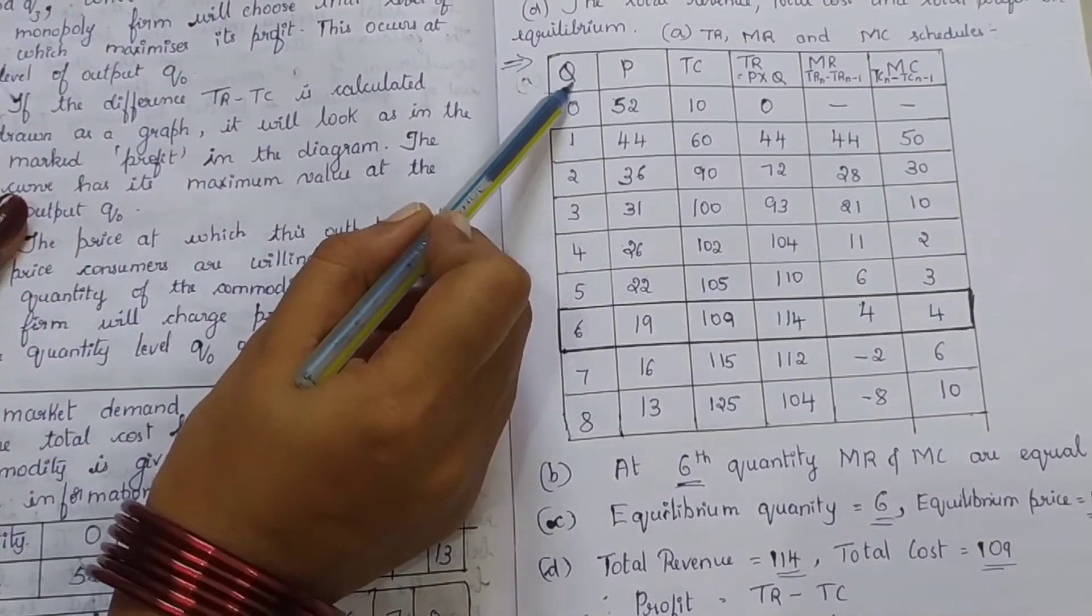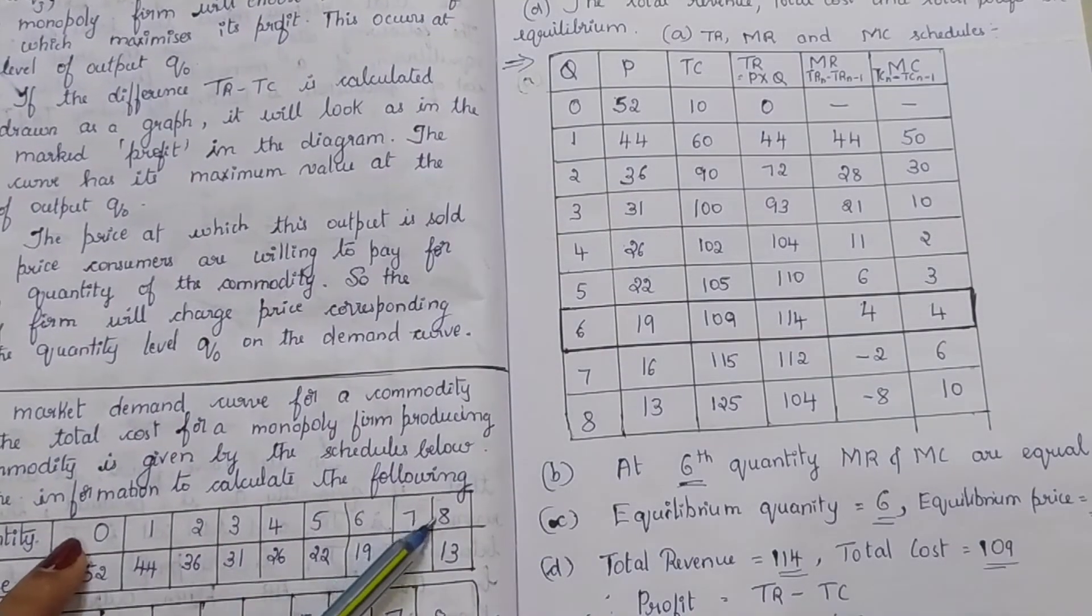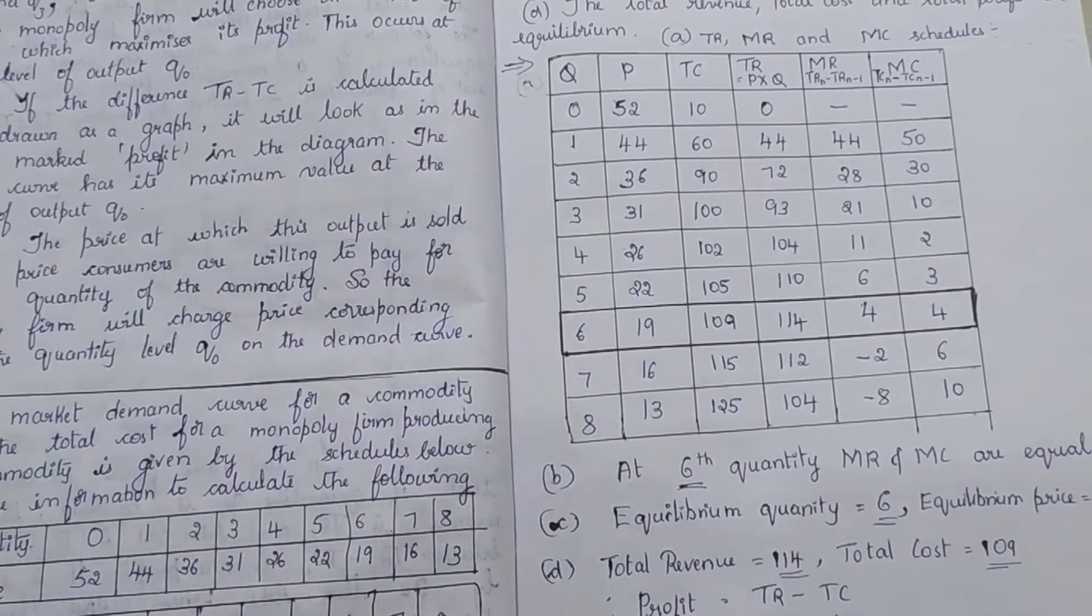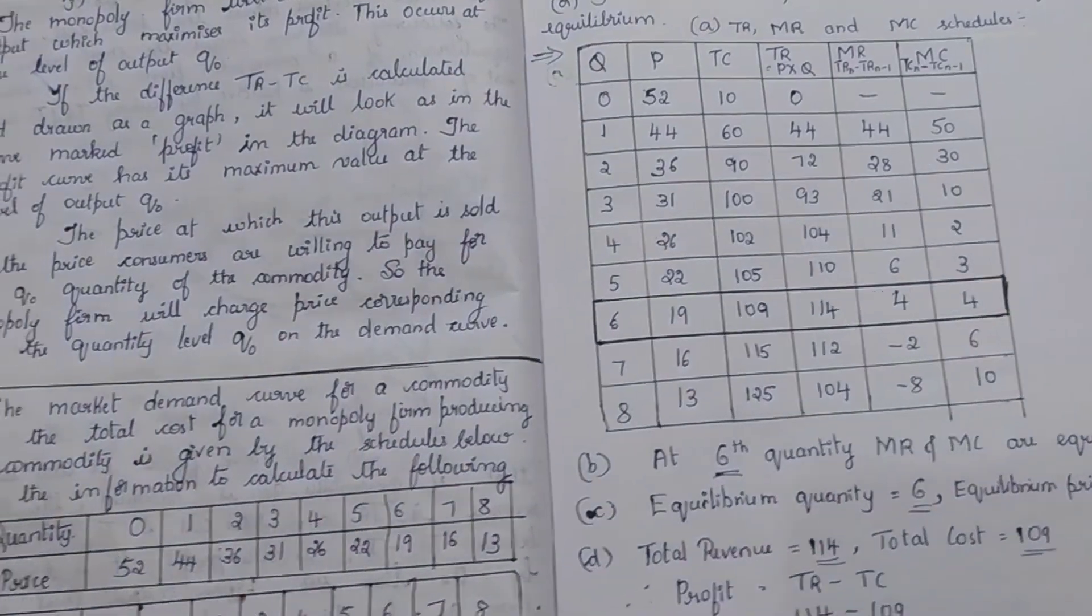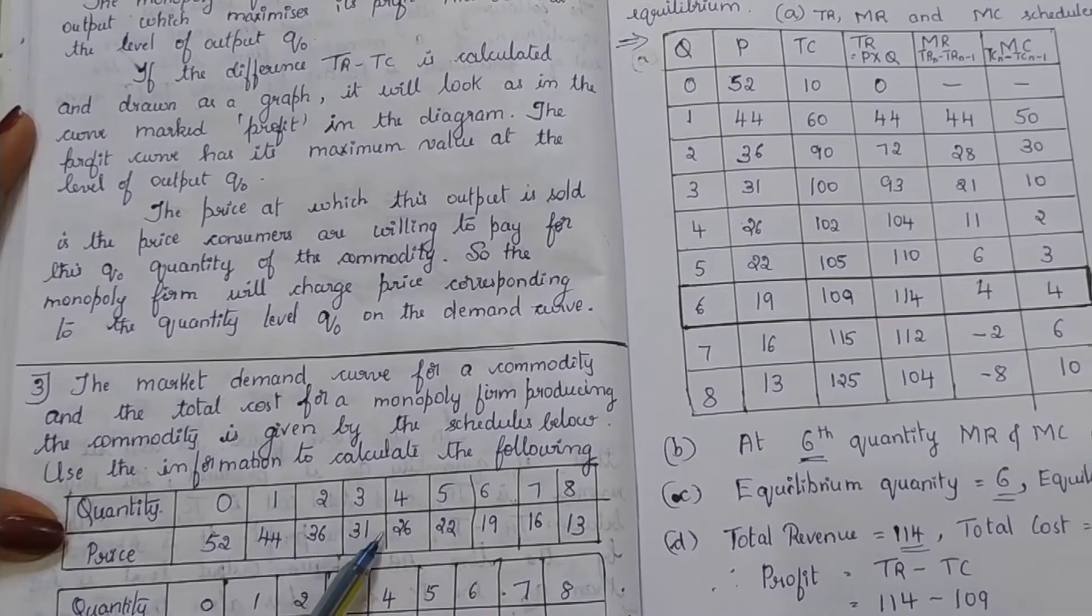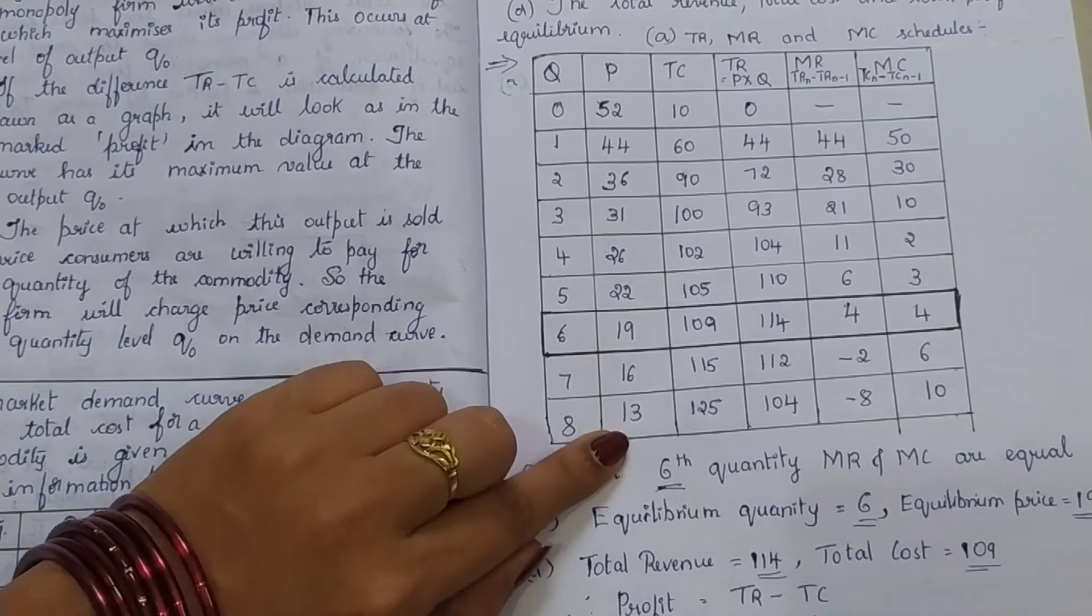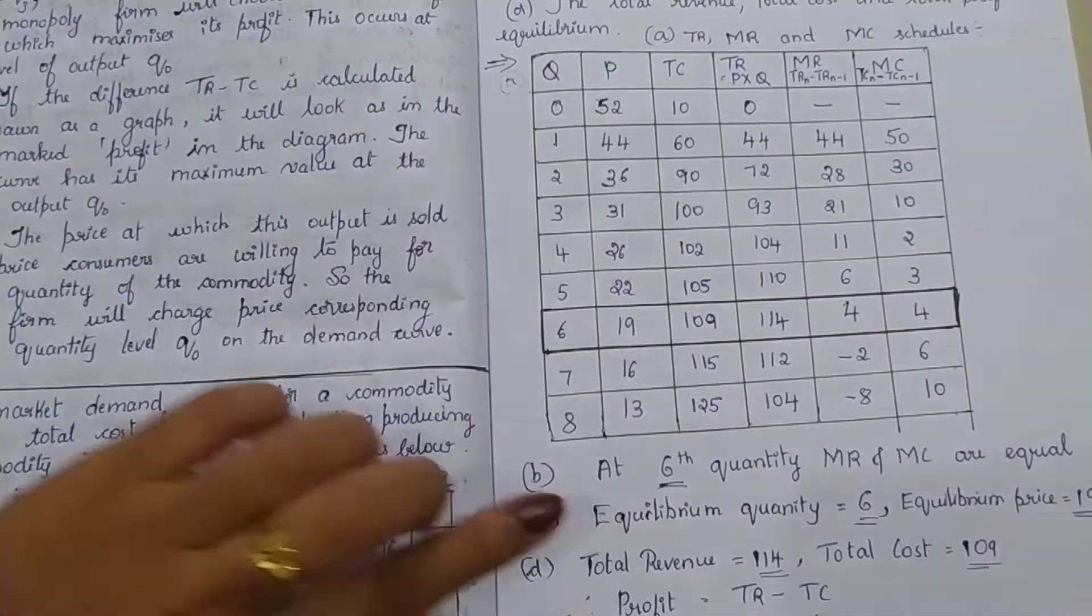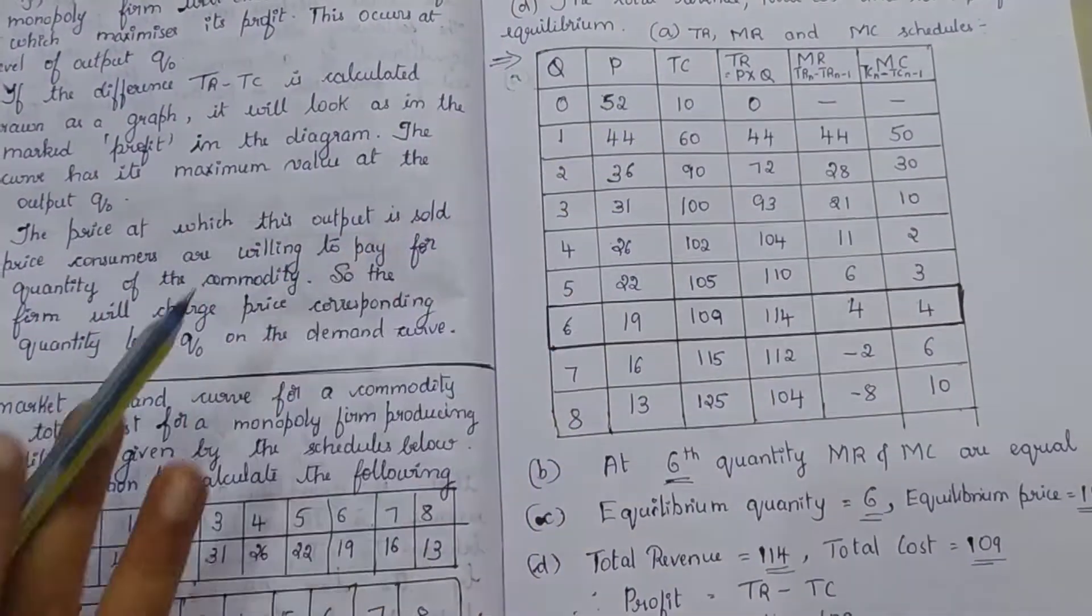Calculate the MR and MC schedules. Here we have calculated MR and here we have calculated the MC. First of all, we will write the quantity as given in the question. Go on writing 0, 1, 2, 3, 4, 5, 6, 7, 8. Then, in the next column, we write the price. Price is given: 52, 44, 36, 31, 26, 22, 19, 16, 13. Next column, we will write the total cost.